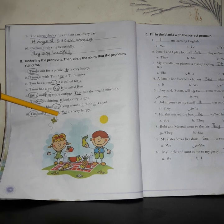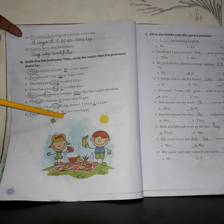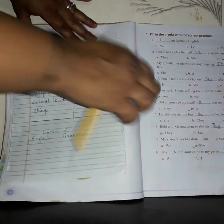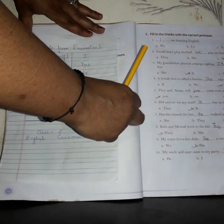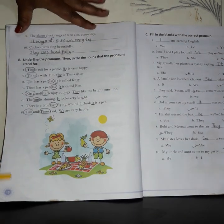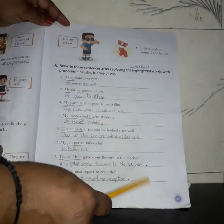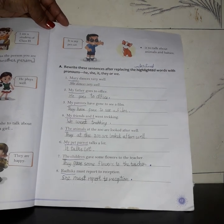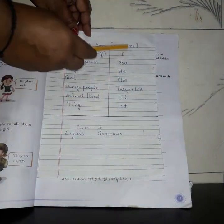'Tim and Tinny said: We are happy.' 'We' is a pronoun replaced for Tim and Tinny. Children, keeping these points in mind, learn them by heart. Then you will be able to do page 17 and 18 on your own, without taking the help of your parents. You will be able to do pronouns only by keeping these points in mind.